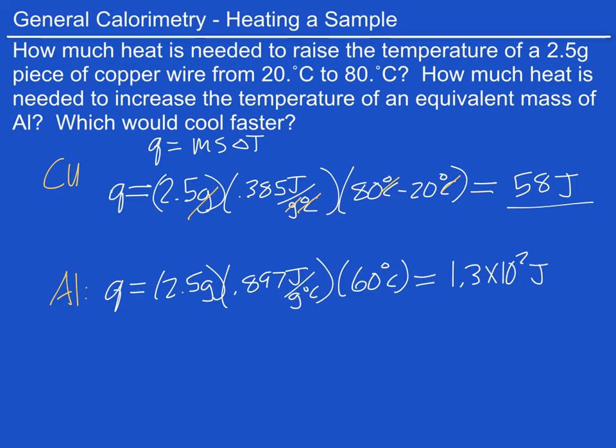So that is the amount of heat needed to heat up 2.5 grams of aluminum from 20 degrees Celsius to 80 degrees Celsius. So now onto the third part, which of the two would cool faster? Well, this gets to what exactly we mean when we're going over specific heat.